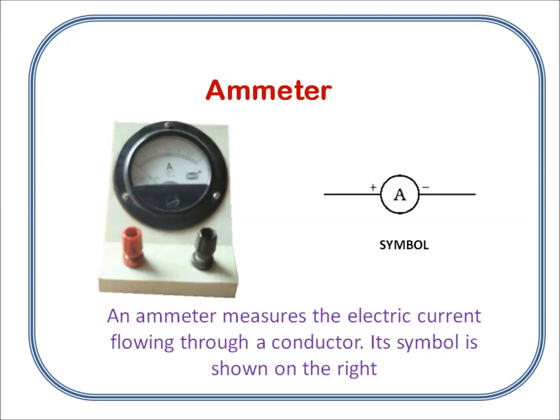An ammeter measures the electric current flowing through a conductor. Its symbol is shown on the right.